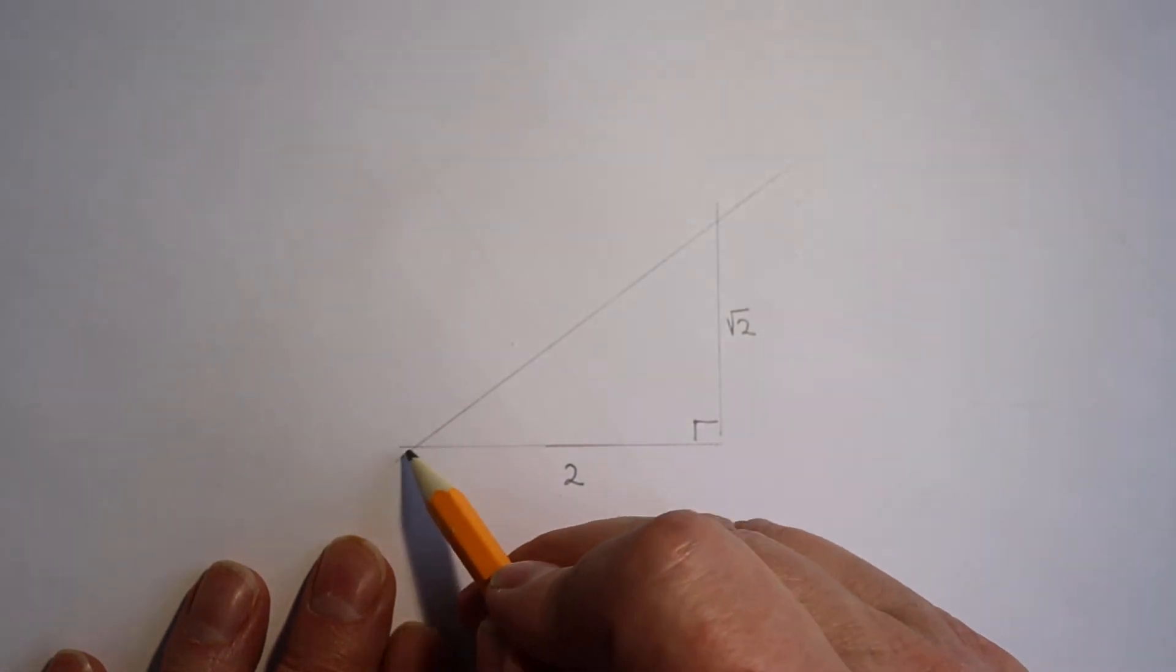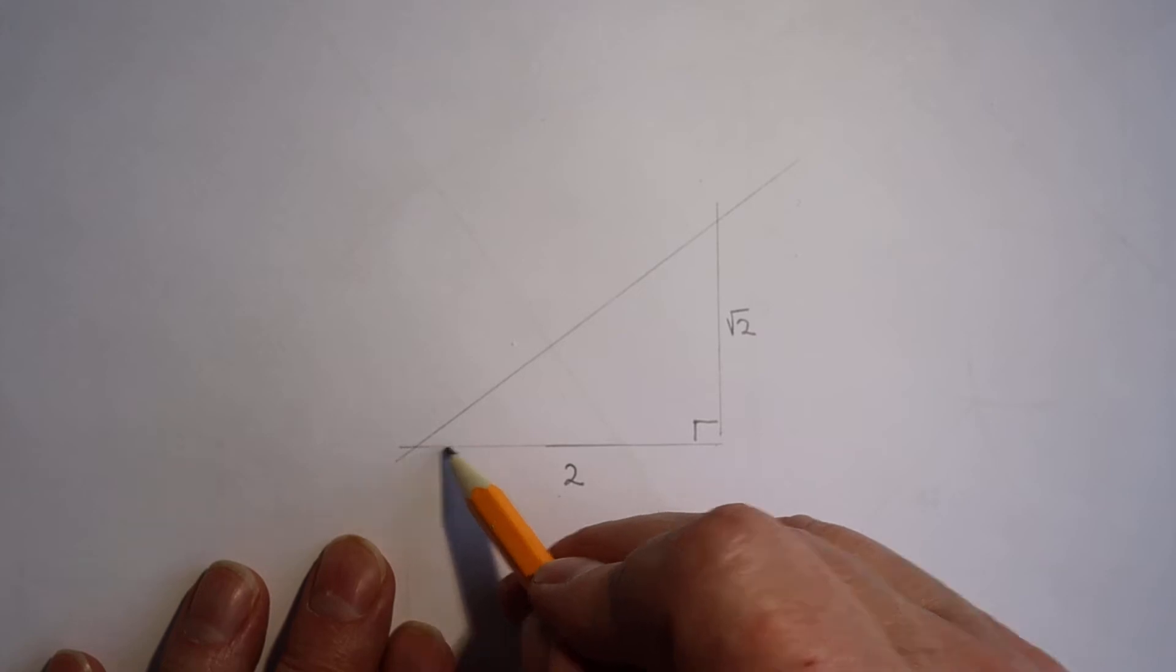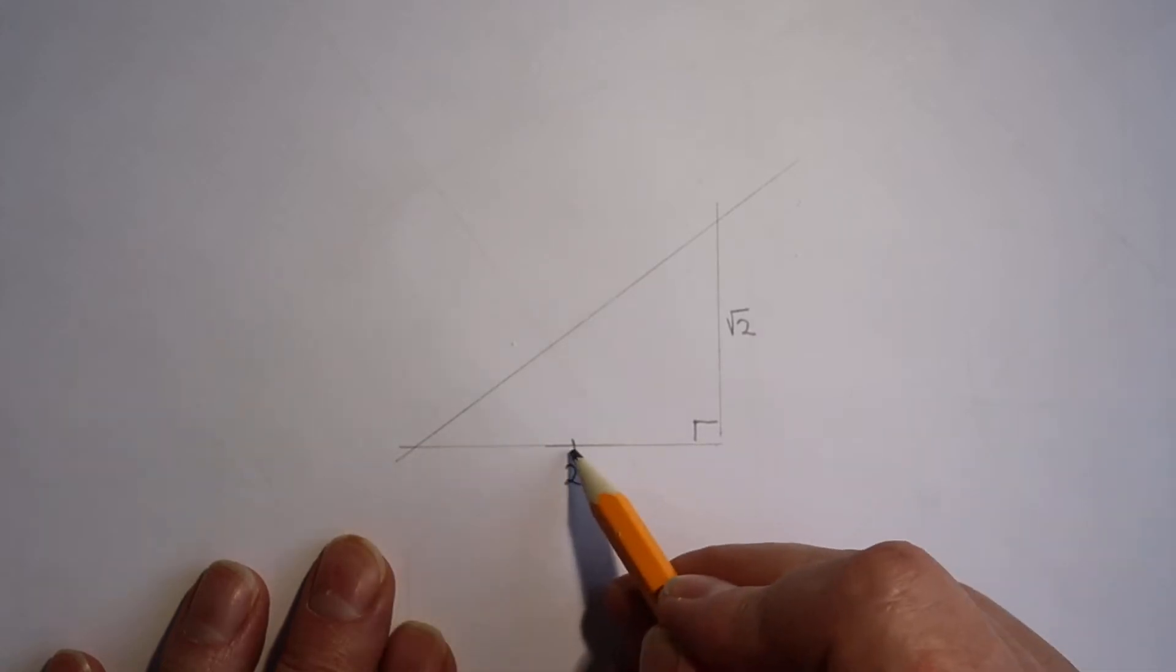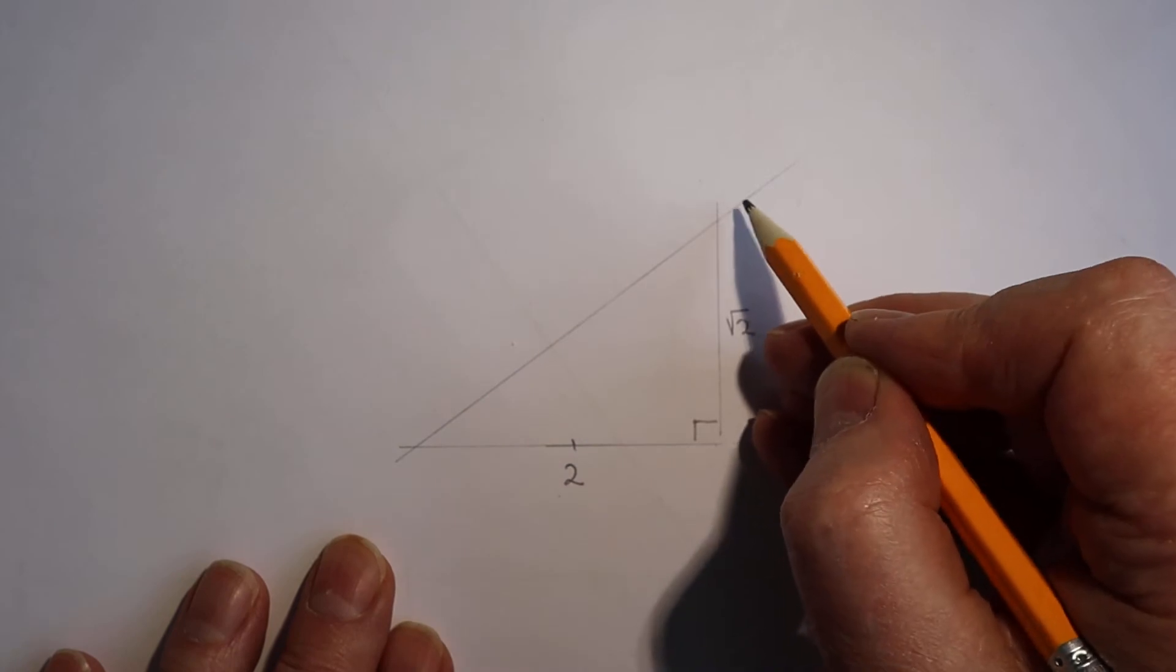So if we can construct a triangle with our correct unit length, with two units there and root 2 here, we've got root 6.